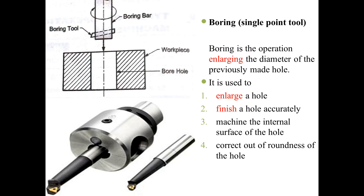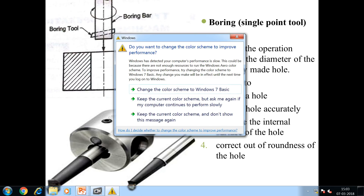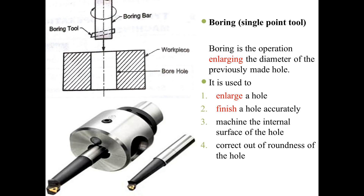The next operation is boring, which uses a single point cutting tool as discussed for the lathe machine. Here we use a boring bar having a single point cutting tool. Its function is to enlarge an already drilled hole. Since we cannot always have larger diameter twisted drill bits available, we first perform the drilling operation with an available drill bit and then use a boring tool to enlarge the diameter. It is also used for finishing the hole accurately and for machining the internal surface of the hole.